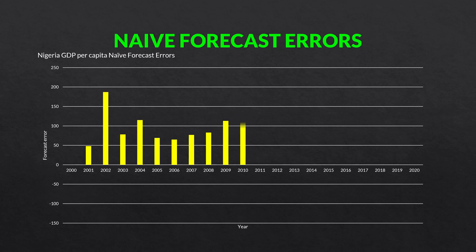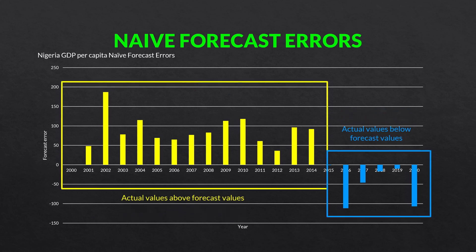So here are the naive forecast errors. I like building up how the errors change depending on the model we use. In the naive forecast, we saw that we had actual values above the forecast values on the left-hand side, and then actual values below the forecast values on the right-hand side. That's because with data like this that has a very strong trend, the naive forecast by definition can't keep up with the trend, leading to large errors at the beginning and end. What I've done for the next couple of slides is morph them so you can see that as the forecasting model changes, how the errors change as well.